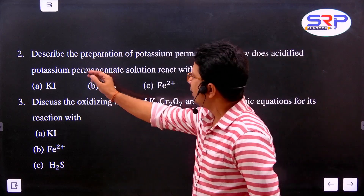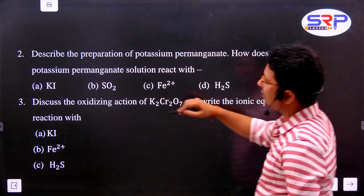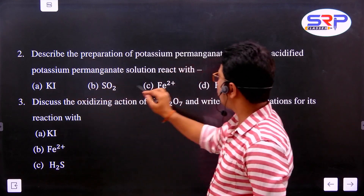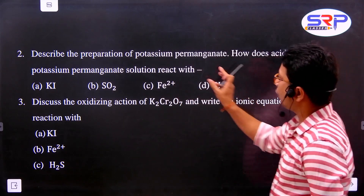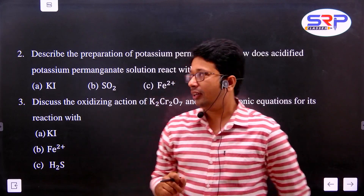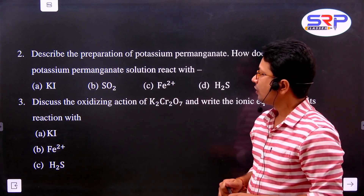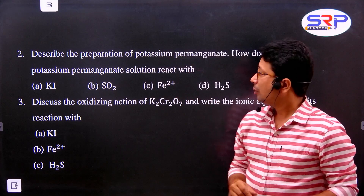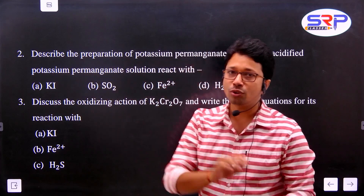Describe the preparation of potassium permanganate. How does acidified potassium permanganate solution react with K2SO2, Fe2+, and H2S? Potassium permanganate is an oxidizing agent. These are redox reactions. You must remember the preparation as well - this is a long question.